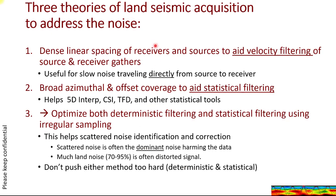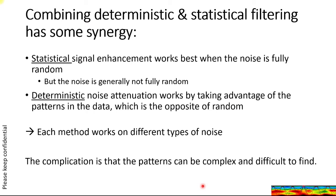I've reviewed three theories of land seismic acquisition. I'm proposing that now we have enough sources and receivers to optimize both deterministic and statistical filtering using irregular sampling, focusing on the scattered noise. Combining deterministic filtering and statistical filtering has synergy: statistical signal enhancement works best when the noise is random, but the noise is not fully random. Deterministic noise attenuation works best by taking advantage of patterns in the data, which is the opposite of random. Each method works on different types of noise, so they're complementary.